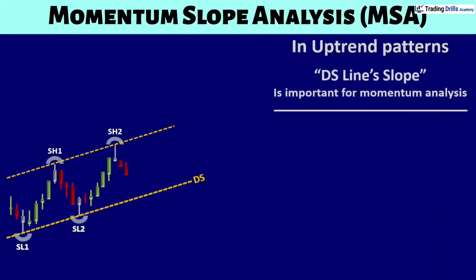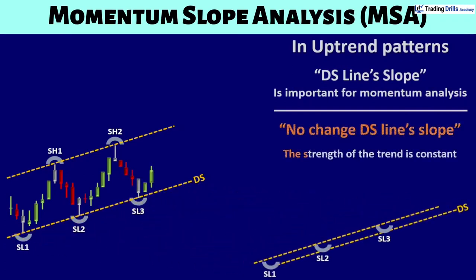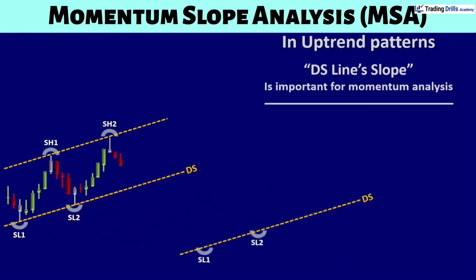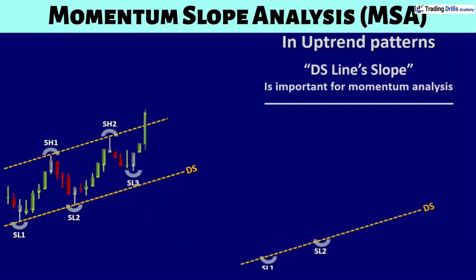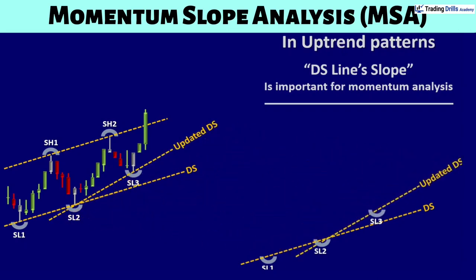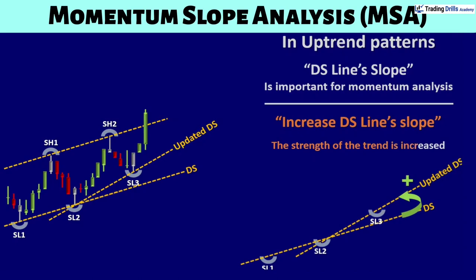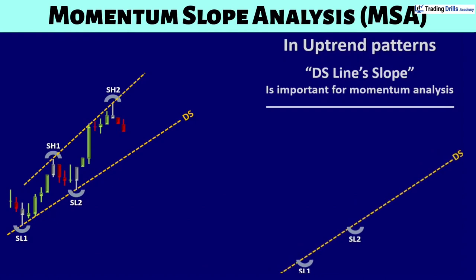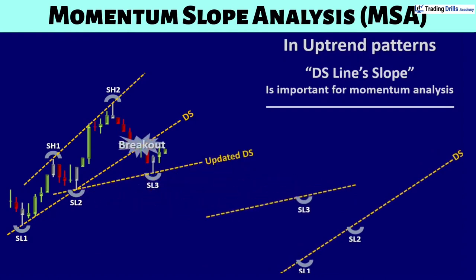In an established uptrend, we compare the slope of the last two dynamic support lines. No change in slope means the strength of the trend is constant. An increase in the slope means the strength of the trend is increasing. A decrease in the slope means the strength of the trend is decreasing.